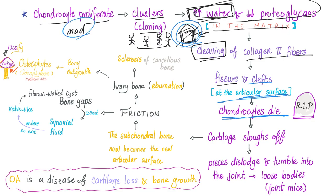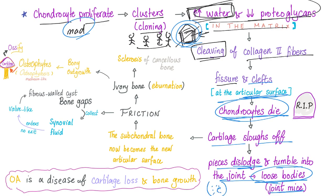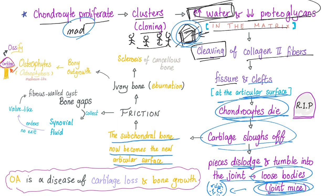The cartilage sloughs off, which leads to pieces that dislodge and tumble into the joint — loose bodies in the joint called joint mice. When the cartilage sloughs off, the subchondral bone is exposed and becomes the new articular surface, which is bad because bones shouldn't be in contact with bones. This leads to increased friction on these bones.